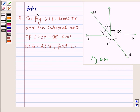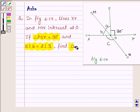Hi and welcome to the session. I am Asha and I am going to help you with the following question which says: In figure 6.14, lines XY and MN intersect at O. If angle POY is equal to 90 degrees and a is to b is equal to 2 is to 3, find C.